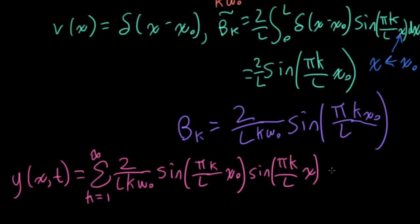And then I'll have my term associated with the actual oscillation, which is sine of k omega naught t, where omega naught is the fundamental frequency in radians per second. You would have to divide by 2 pi if you want that in hertz.